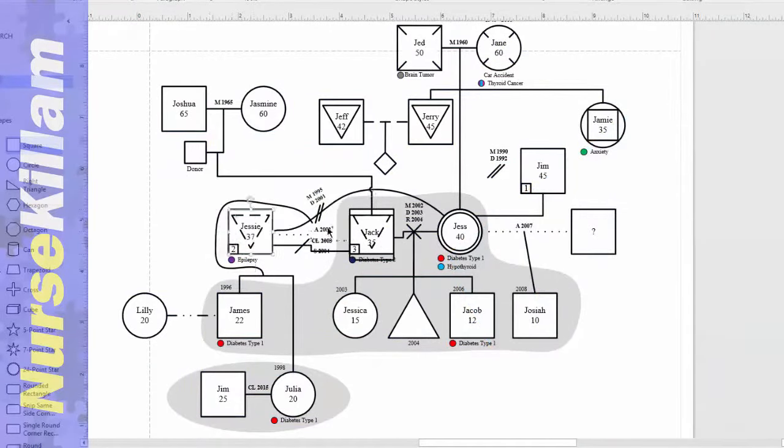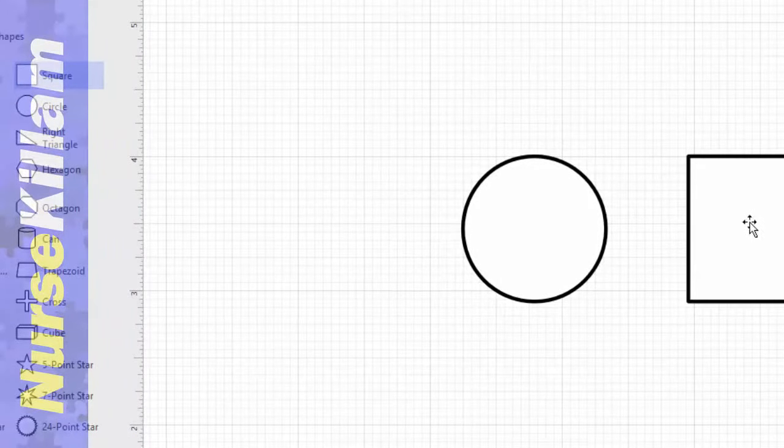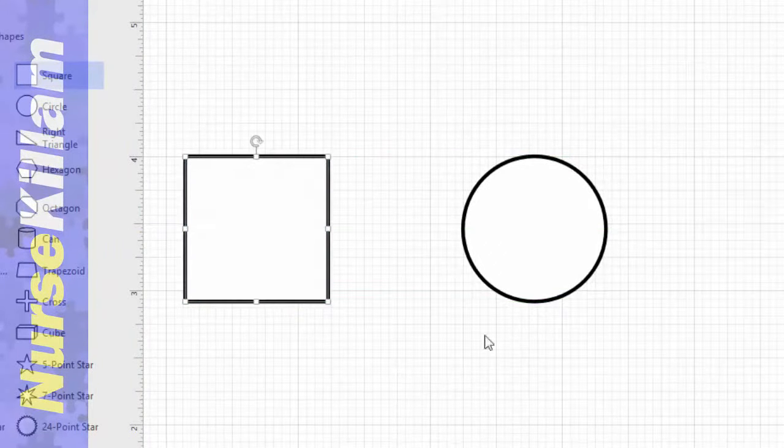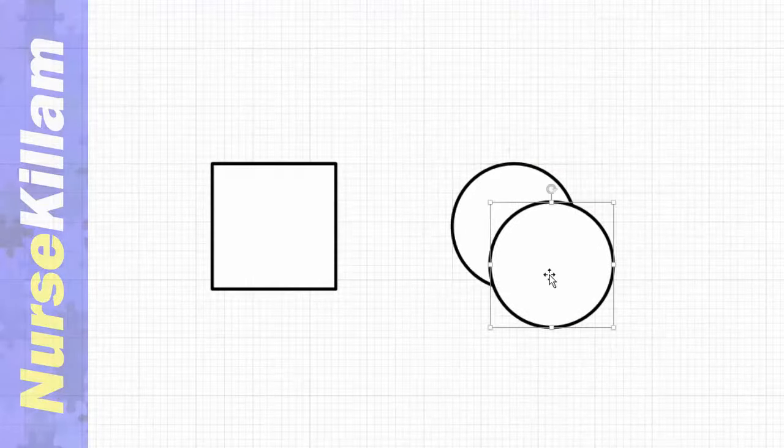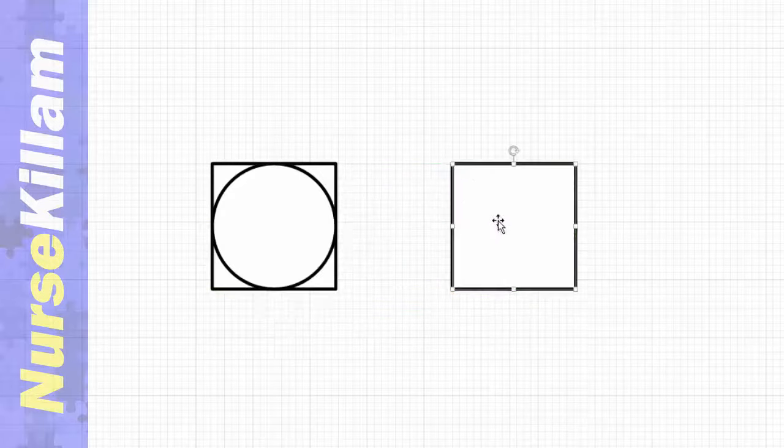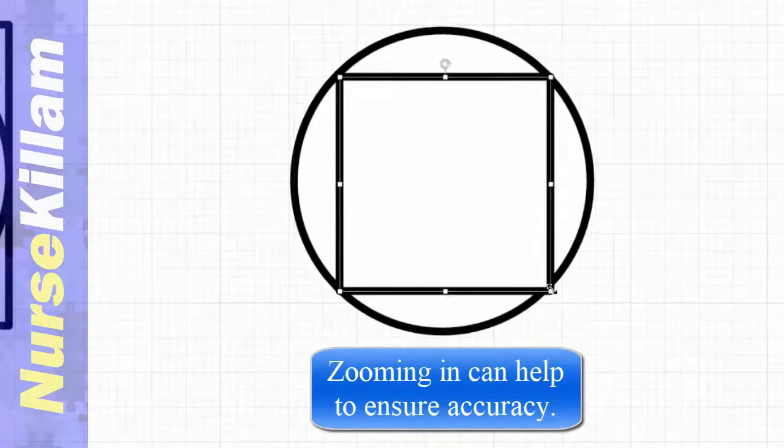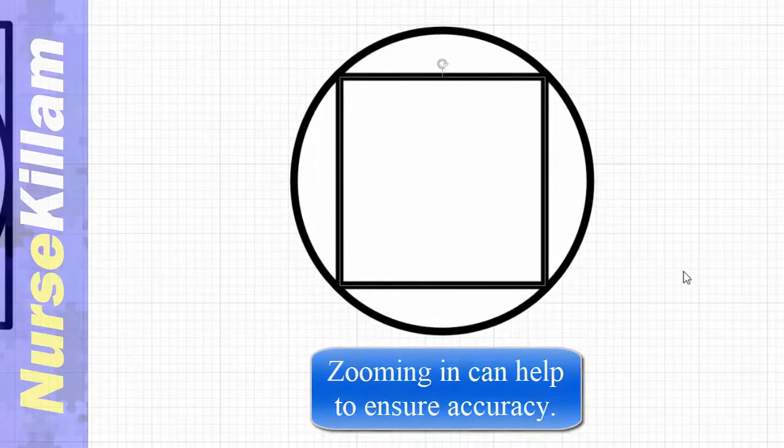A square signifies a male, a circle signifies a female. In a relationship, the male is on the left. A transgendered individual has the shape of the gender they were born with inside the shape of the gender they identify with. To create this shape, overlay the shape of the gender the individual was born with and resize it if needed so it touches the outside shape.